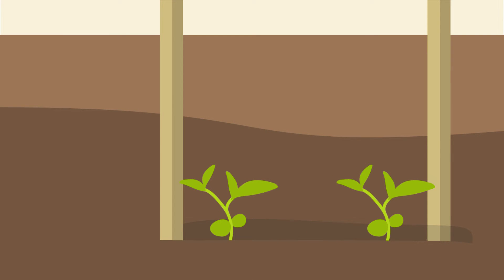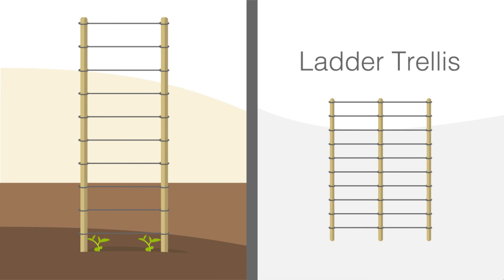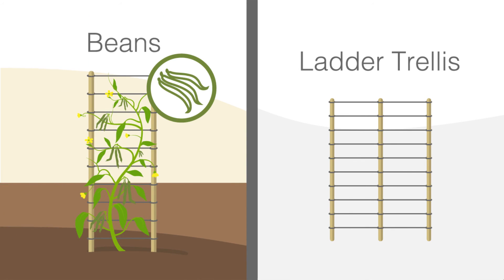Tightly tie a piece of string or metal wire in between the sticks fifteen centimeters up from the soil. Repeat this every fifteen centimeters, creating a ladder above the plants. A ladder trellis is best for beans and peas.